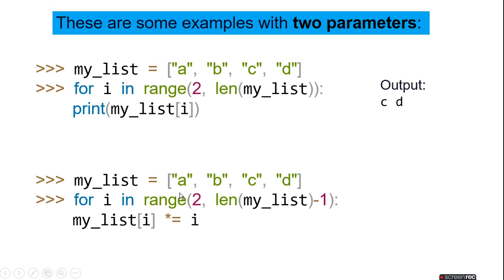My_list equals a, b, c, d. For i in range 2, len of my_list minus 1. It will reduce the len of the list. And so when you write my_list i star equals i, then it will duplicate the c position and print c double time.